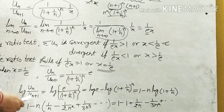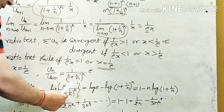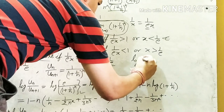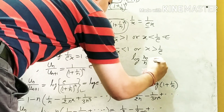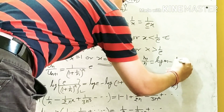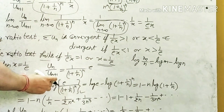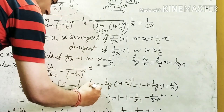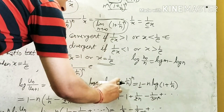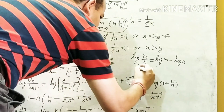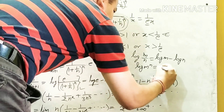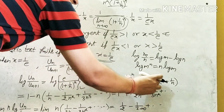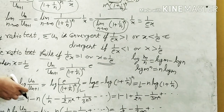For the logarithm test, we take the log of un/un+1: log[e / (1 + 1/n)^n]. Applying the formula log(m/n) = log m − log n, this becomes log e − log(1 + 1/n)^n. Since log e = 1, and using log(m^n) = n·log m, this becomes 1 − n·log(1 + 1/n).